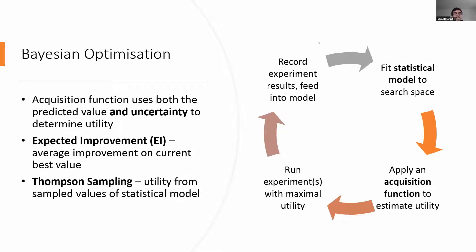You run the experiments with maximum utility — and sometimes you can run five or ten experiments in parallel at each round rather than just one, which is more efficient. You record the results — in our case the yields — and feed them back into the model. This is why it's called Bayesian optimization: at each stage you condition on the already-identified experiment results to further refine the model.